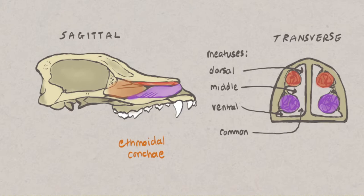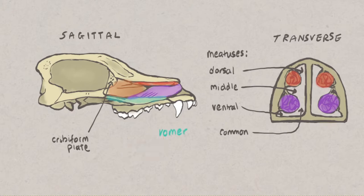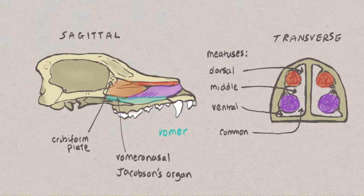Odour particles dissolve in the mucus and stimulate specific olfactory nerve fibres. These nerves pass through the cribriform plate of the ethmoid bone to reach the olfactory bulbs in the brain. The vomeronasal, or Jacobson's organ, is an accessory olfactory organ located ventral within the nasal cavity, dorsal to the palatine. This organ can detect chemical signals, including pheromones, which are important for social signalling and responses.